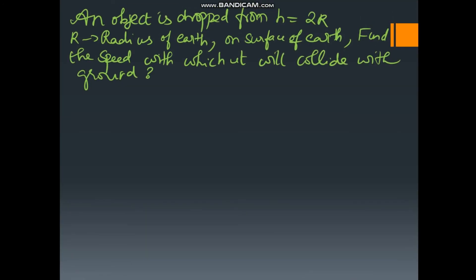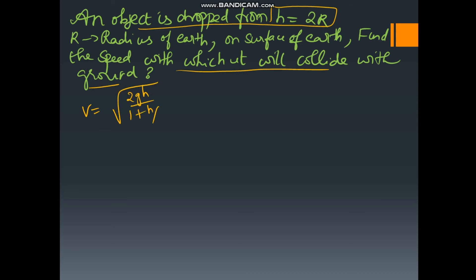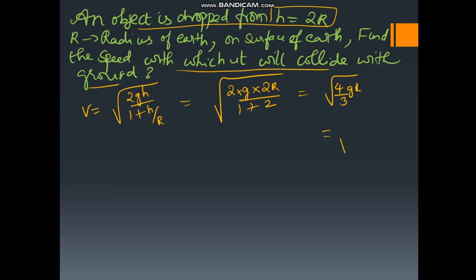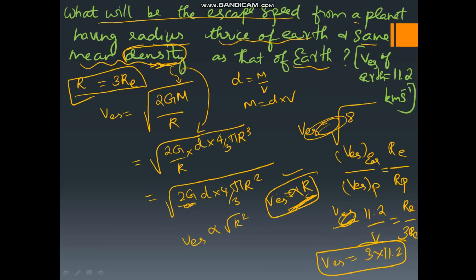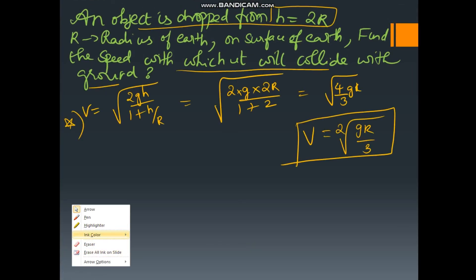Now let us see this question: an object is dropped from h = 2r. Find the speed with which it will collide. Whenever they give that an object is dropped from a height h or thrown to a height h, we use the formula: v = √(2gh / (1 + h/r)). Substituting h = 2r gives the speed with which it will collide.